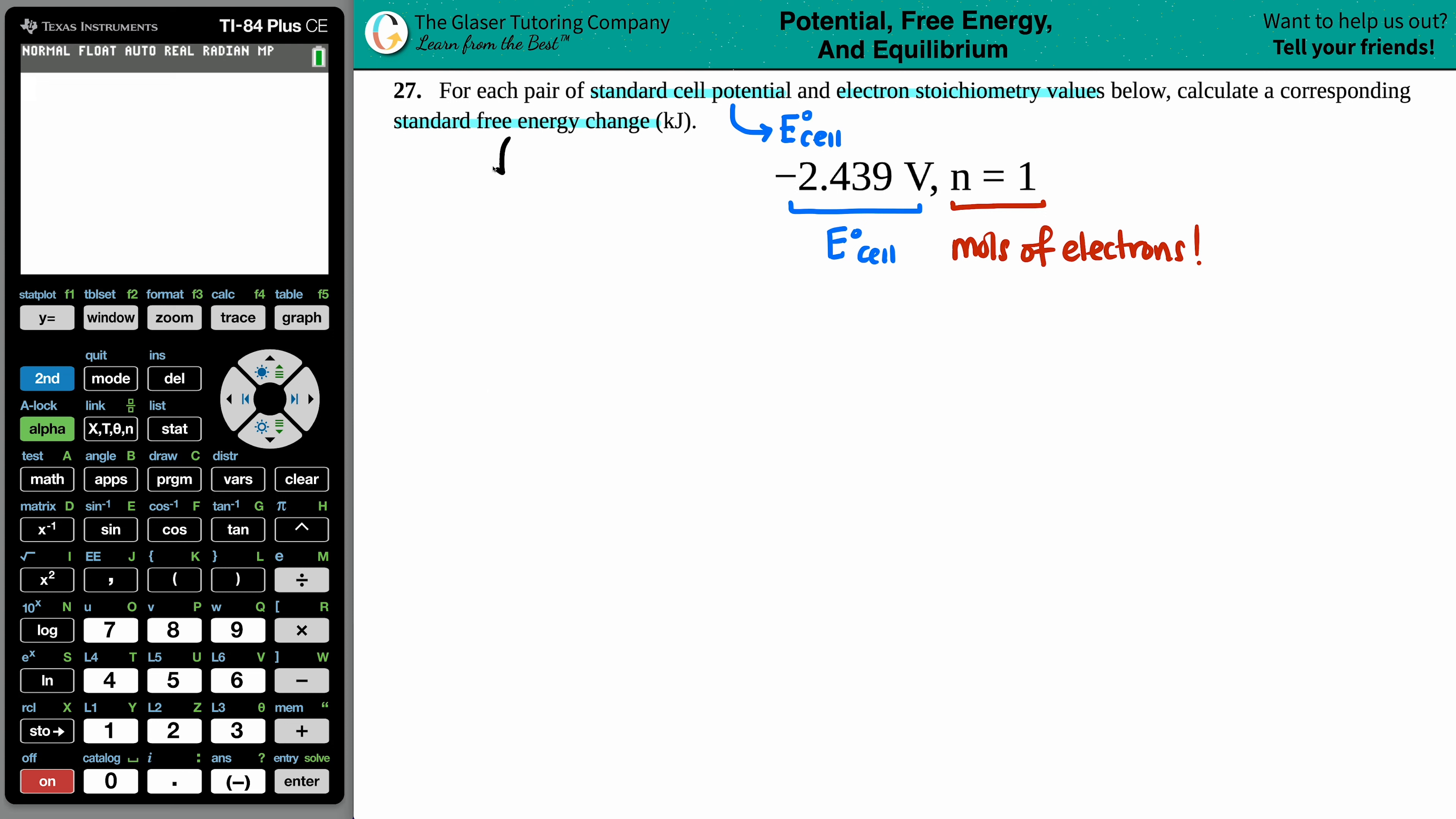Now we want to find that standard free energy change. A free energy is a G value. The change would be a delta G. And since we're also talking about standard, I know I have that little notch there. So this is what I want. So I say to myself, do I know any formulas that have a delta G value, an E cell, and a mole value? Yeah, I do. There's only one of them and it's this one. Delta G notch equals negative nF E cell.